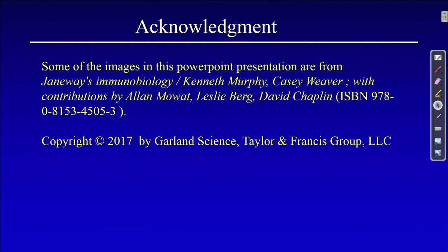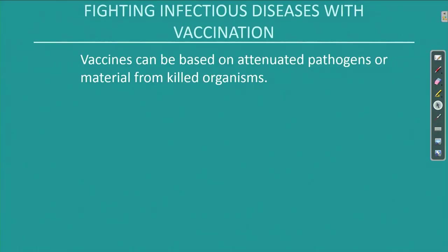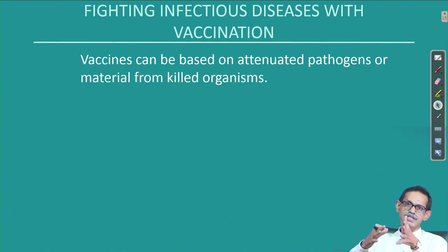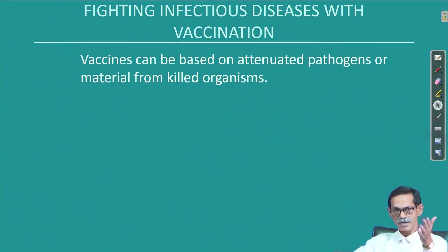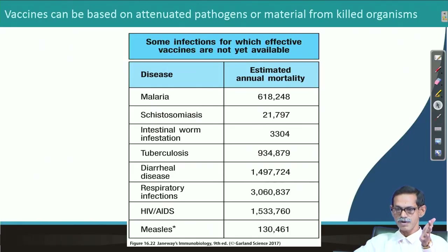This is the routine acknowledgement — I am using many images and slides from a general microbial biology book. In continuation of what we have already discussed, vaccines can be based on attenuated pathogens or material from killed organisms. Whichever is possible and available, depending on that, there are advantages and disadvantages — both of them have problems.